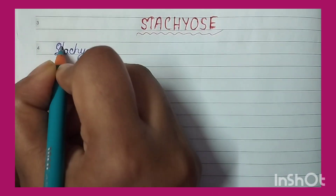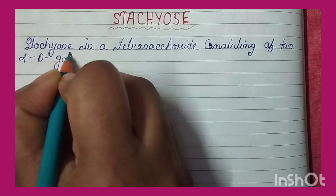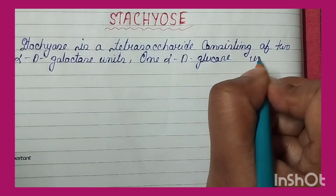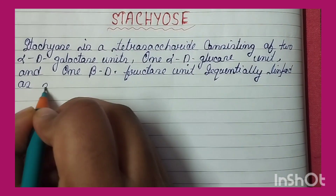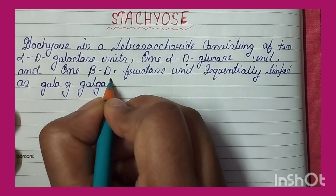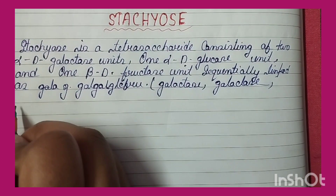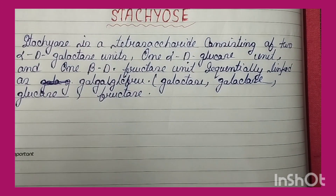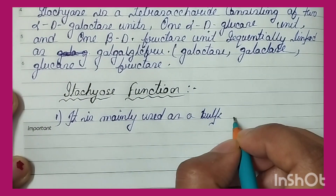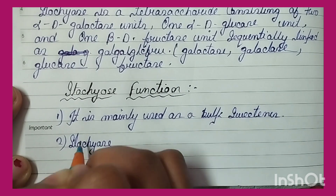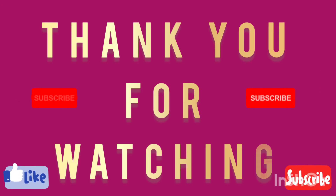Stachyose is a tetrasaccharide consisting of two alpha-D-galactose units, one alpha-D-glucose unit, and one beta-D-fructose unit, sequentially linked — galactose, galactose, glucose, and fructose — forming the stachyose molecule. Its functions: first, it is mainly used as a bulk sweetener; second, stachyose has functional oligosaccharide properties.